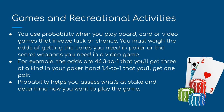In games and recreational activities, probability is used when you play board games, card games, or video games that involve luck or chance. You must weigh the odds of getting the cards you need in poker, or the secret weapons you need in a video game. For example, the odds are 46.3 to 1 that you'll get three of a kind in your poker hand — approximately a 2% chance — but the odds are approximately 1.4 to 1, or about 42%, that you'll get one pair. Probability helps you assess what is at stake and determines how you play the game.